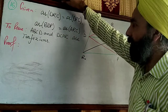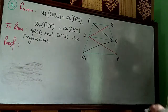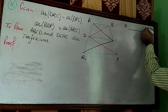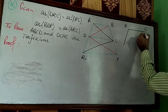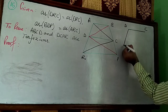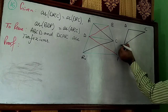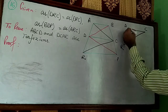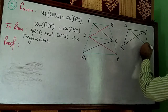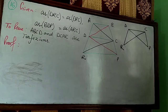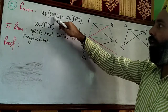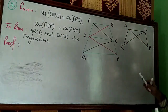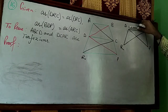We will use the same concept as we are using in previous questions. We have triangle DRC and triangle DPC. According to the question, area of DRC equals area of DPC. These two triangles are on the same base DC.